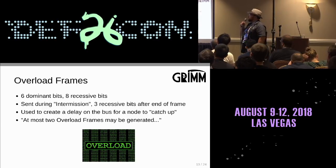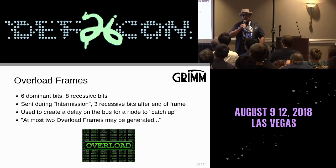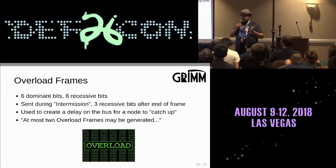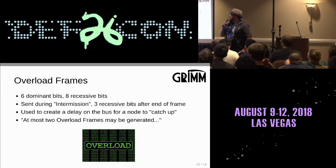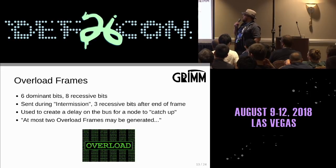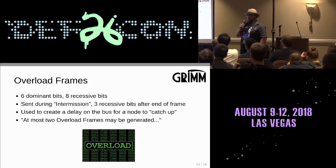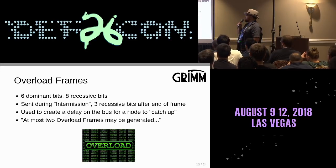Overload frames: the intention is that if a slower microcontroller needs a bit more time to process a message, it can send an overload frame to delay CAN message processing for a short period. It's six dominant bits followed by eight recessive bits, and it's sent during the intermission — the three recessive bits after end of frame. According to the spec, at most two overload frames may be generated, but it doesn't say anything about what to do if you generate more than two.